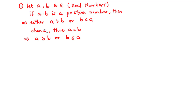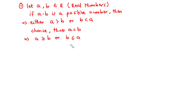Now if there is a possibility or a chance that a is equal to b, then we say that a is greater than or equal to b, or better still b is less than or equal to a.